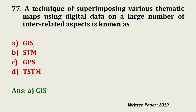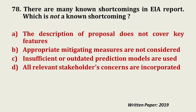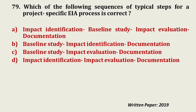Question number 78: There are many known shortcomings in EIA (Environmental Impact Assessment) reports — a very important chapter. The question asks which is NOT a known shortcoming. The description of the proposal not covering key features is a shortcoming; appropriate mitigating measures not being considered is a shortcoming; insufficient or outdated prediction models is a shortcoming. However, all relevant stakeholders' concerns being addressed properly is a positive point in an EIA report, so it is not a shortcoming — that is the correct answer.